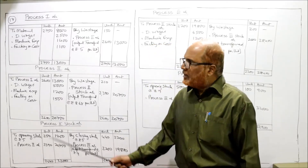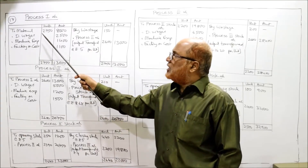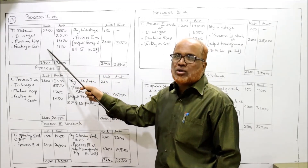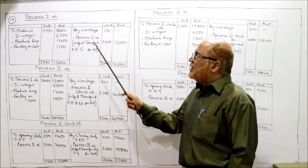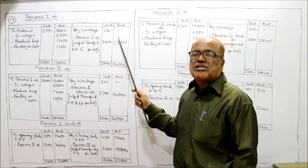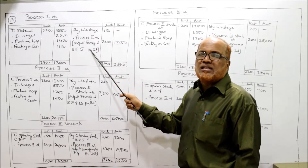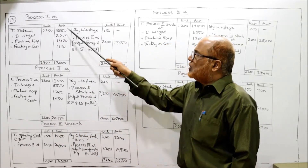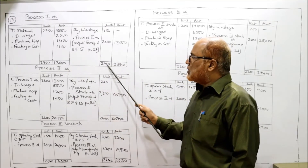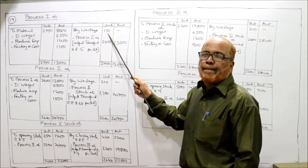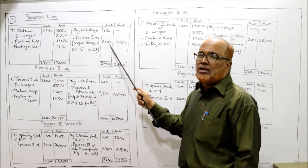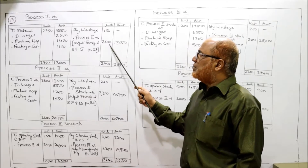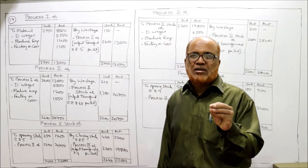In process number one, the gross production is 2,750 units and material used is 8,000 rupees. Direct wages, machine expense, and factory overhead are all debit side items. Normal loss wastage is 150 units with no scrap value. The output of process 1 will go to process 2. Total on the debit side: 13,000 rupees, 2,750 units. So 2,750 minus 150 gives the balancing figure of 2,600 units output, valued at 13,000 rupees.